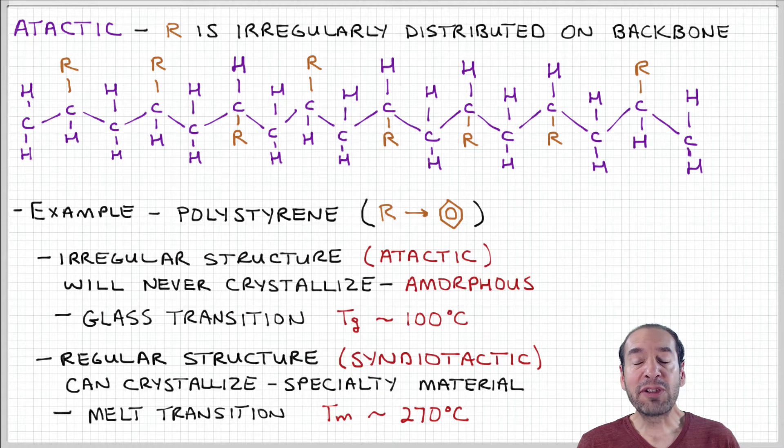But it is possible through specialized chemistry to produce a regular structure for polystyrene. And in particular, syndiotactic polystyrene can be synthesized. And by adopting that regular or stereoregular arrangement of the side groups, this material can actually exist in a crystalline state. So syndiotactic polystyrene can crystallize, and it has a melt transition then of around 270 degrees C. So again, this is a very specialized material. It requires specialized chemistry to produce the chains with the side groups arranged in this order.